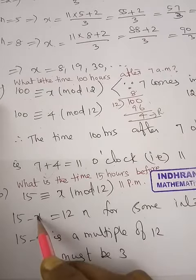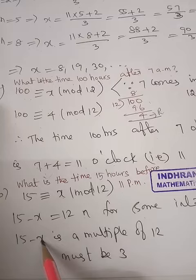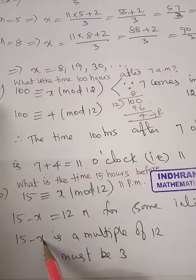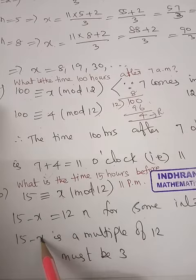Suppose x is 1: 15 minus 1 is 14, not a multiple of 12. If x is 2: 15 minus 2 is 13, not a multiple of 12. If x is 3: 15 minus 3 is 12, which is a multiple of 12. So x must be 3.